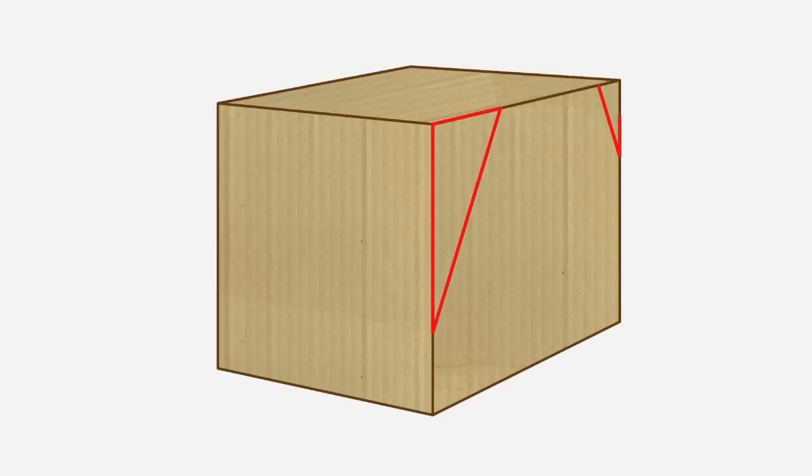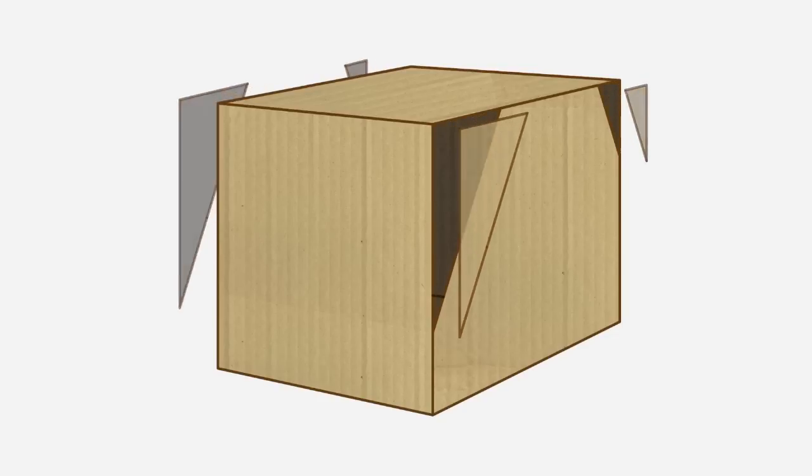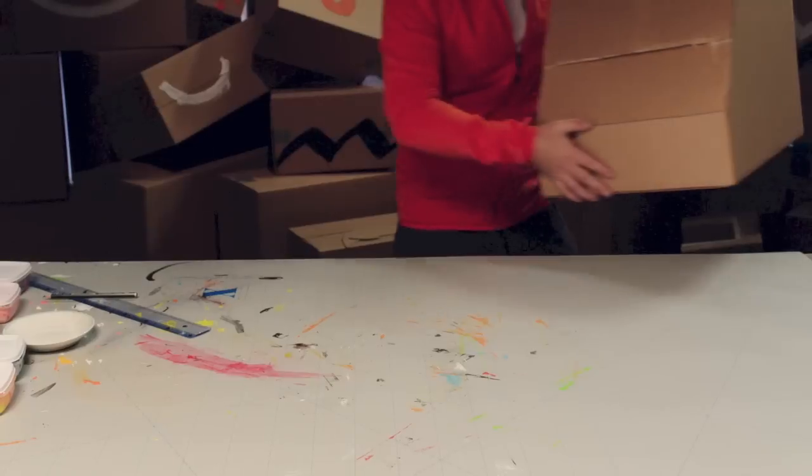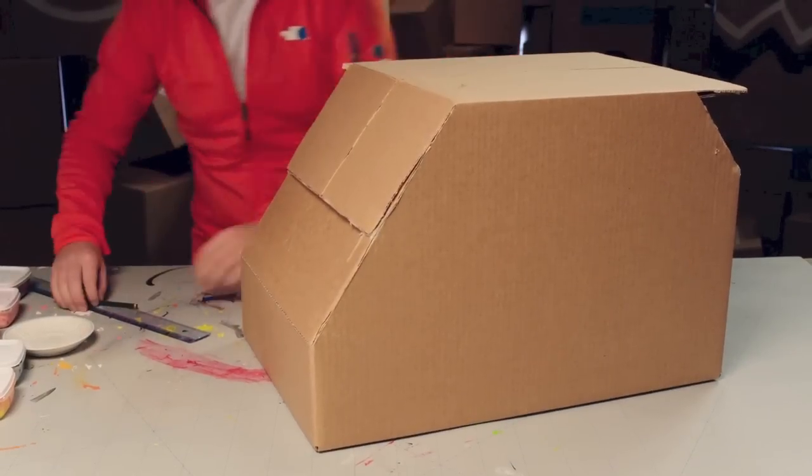First, cut out and remove the triangles on each side. Then, pop some glue along these edges. And cut along these lines so you can fold and stick the cardboard down. Pop on a bit more glue, then fold down from the top. This is how it should look when it's all glued together.